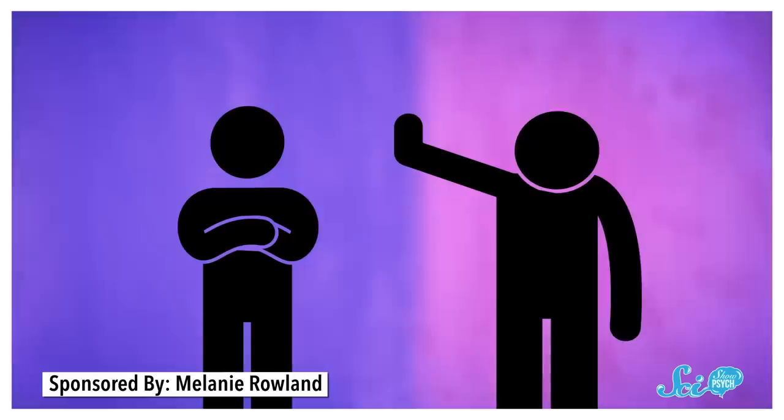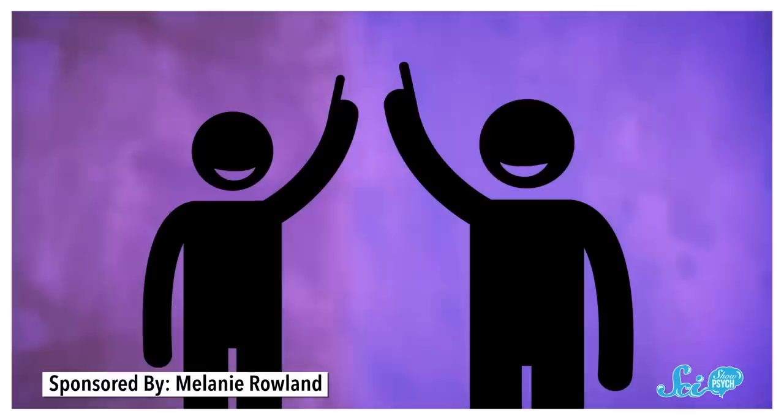One study found that social anxiety makes telling someone about yourself less effective at building closeness. While another found that moving in sync with someone else, for instance, going through two versions of an assignment to check them against each other, can make it more effective.